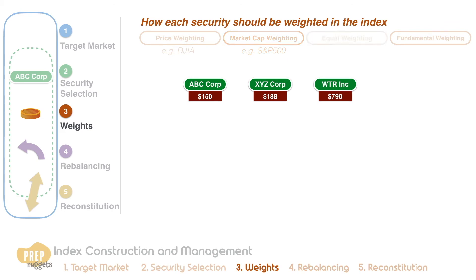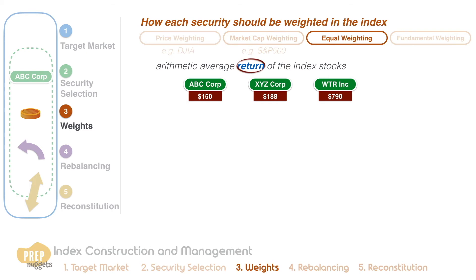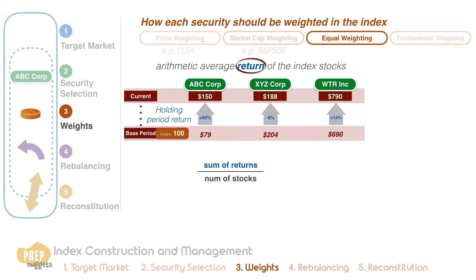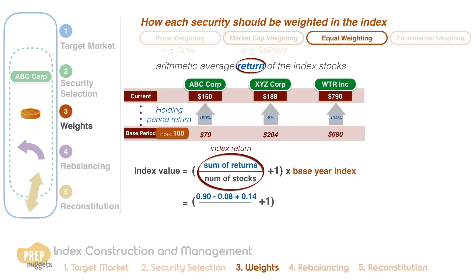An equal weighted index is calculated as the arithmetic average return of the index stocks. Note that it is the return of each stock and not the price as used in a price weighted index. The method for calculating the index value is simple. If these are the prices of the stocks on the base period where the index value is 100, calculate the holding period return for each stock, and the arithmetic average of the returns is the return of the index for this period. Increasing the index value by this amount gives a current index value of 132 points.